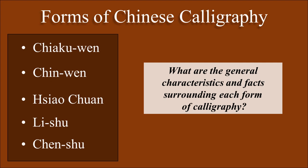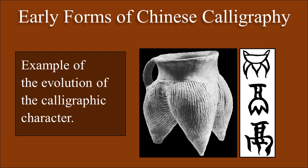On this slide, I want to show you the evolution of these early forms of Chinese calligraphy. What I have pictured here is called a Lai, which is a three-legged pottery vessel. And here you see, from top to bottom, the evolution of the character Lai. First is Chai Kou Wen, then the middle one is Chin Wen, and the bottom one — the modern form — is Chen Xu.